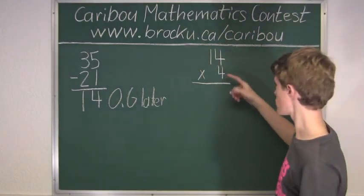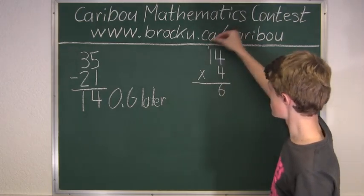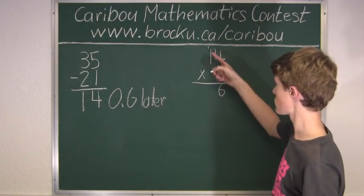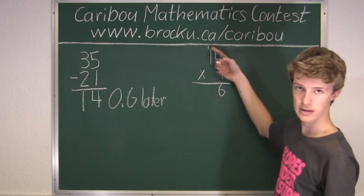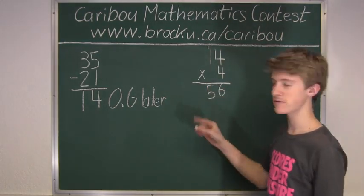4 times 4 is 16. Then you carry the 1 into the tens column. 4 times 1 is 4, plus the 1 carried over is 5. So we know that it is 56 years.